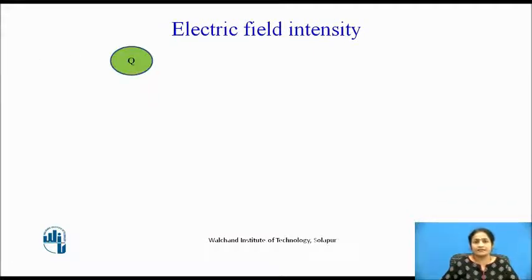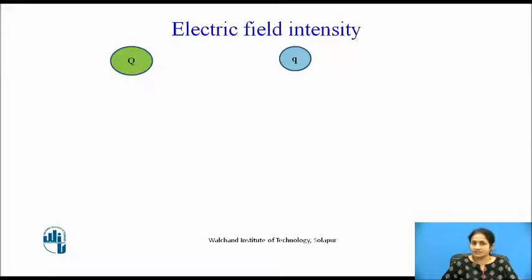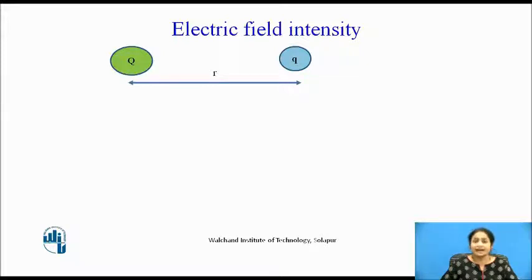For explaining the electric field intensity, let us consider a charge Q which is a positive charge placed in free space, and there is one more charge Q. If the polarity of these two charges are opposite, then they are attracted towards each other. The distance between them, suppose it is R, this R distance goes on changing. If they are similar charges, then the distance R goes on increasing — they repel each other.